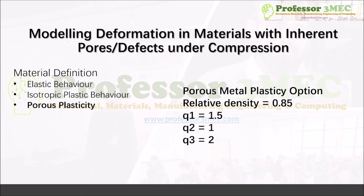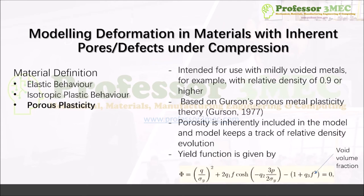For the porous plasticity model in Abaqus, I have used a simple Gurson-type model. You have to define the initial relative density — in this case 0.85 (generally 0.9 is recommended, which I'll explain later). You also need to define three material coefficients: q1, q2, and q3. I'm using specific values for these, which I'll explain in the next few slides.